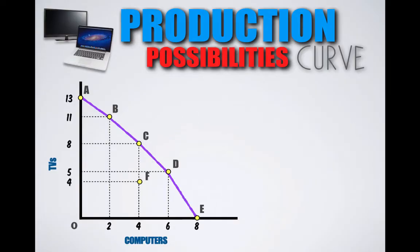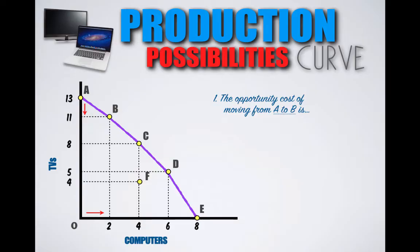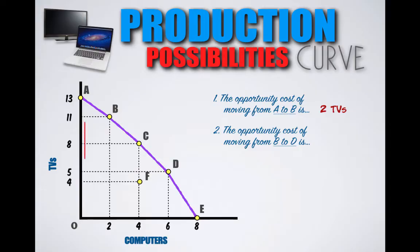We can also use production possibilities curves to help us calculate opportunity costs of production. Using the PPC provided, what is the opportunity cost of moving from Point A to Point B? By moving from Point A to Point B, Country B would reduce its TV production from 13 TVs to 11 TVs, freeing up resources and allowing it to boost its computer production from zero computers to two computers. The opportunity cost of shifting from Combination A to Combination B is two TVs. What is the opportunity cost of moving from Point B to Point D? Country B would reduce its TV production from 11 TVs to five TVs, but increase its computer production from two computers to six computers. The opportunity cost of moving from Combination B to Combination D is six TVs.